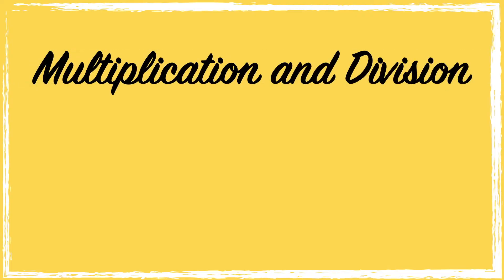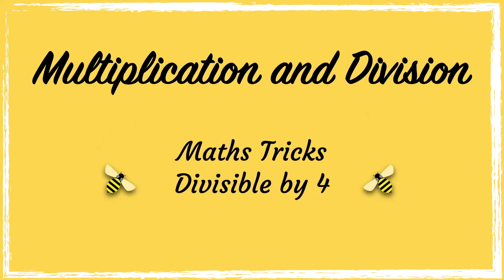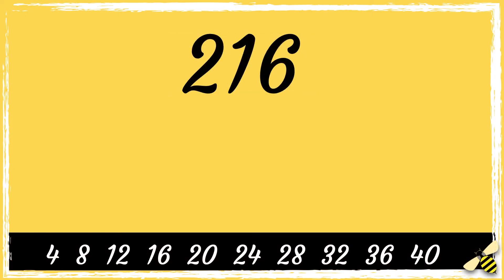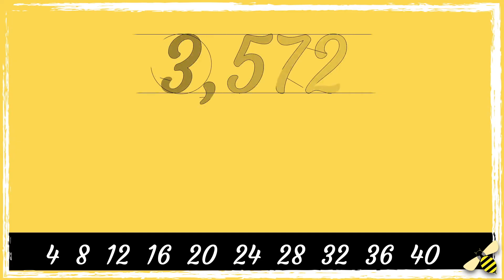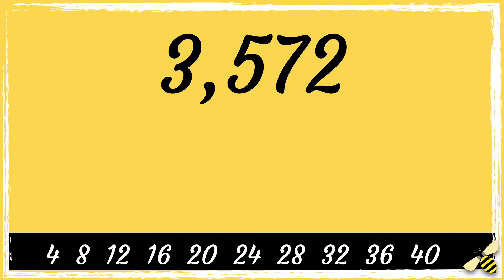In this video we're going to learn a quick trick to find out if any number can be equally divided by four. Here is the number 216. If the last two digits of the number are a multiple of four, then the number will be divisible by four. So let's look at the last two digits: 16 is a multiple of four, which means that 216 is divisible by four.